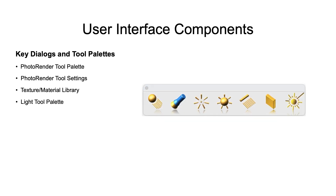The last item is the light tool palette. This provides tools to create discrete light sources in your model, potentially augmenting any environmental lighting you may have. Direct light sources include distance, flood, point, sphere, line or strip lighting, area lights, and lastly laser.